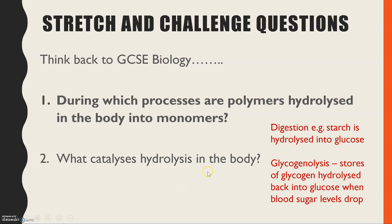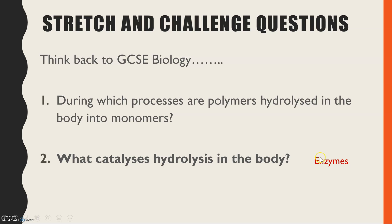Number one: digestion. Digestion is when you have large insoluble molecules, such as starch, and they are broken down — or hydrolyzed — into small soluble molecules, such as glucose. You might not have used this term, but glycogenolysis is the splitting of glycogen back into glucose, which occurs when your blood sugar levels drop low. And what catalyzes these reactions? Of course, enzymes — our biological catalysts — are responsible for those hydrolysis reactions.